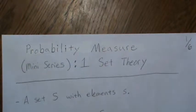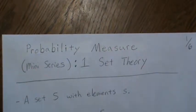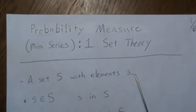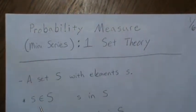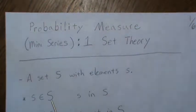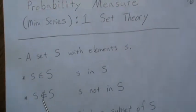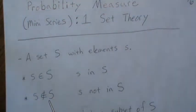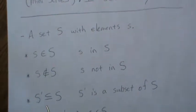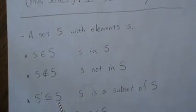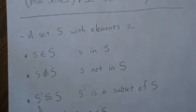A set S has elements little s. Notation-wise, we say little s is an element of S, meaning s is in S. This other notation means that little s is not in S. Since S is a set, we can take a potentially smaller number of those elements and call it S prime. And so S prime is a subset of S.